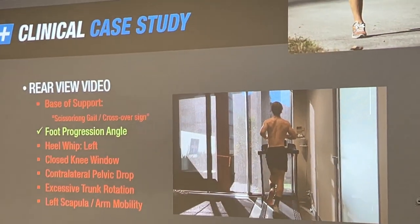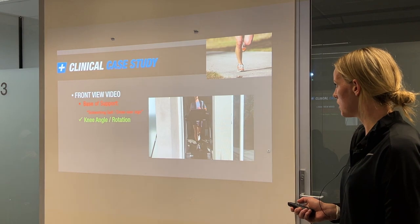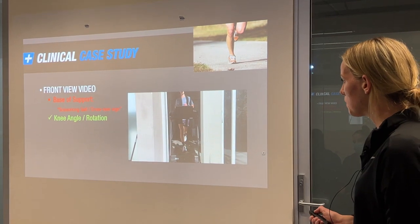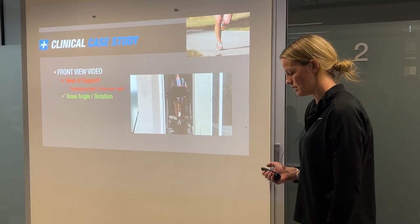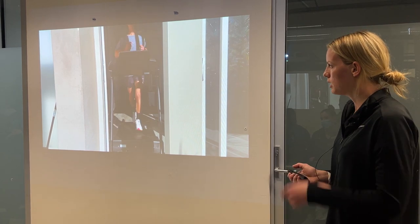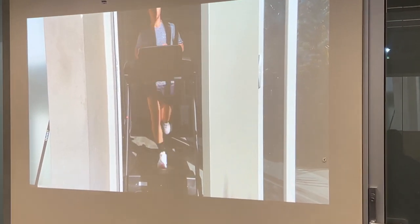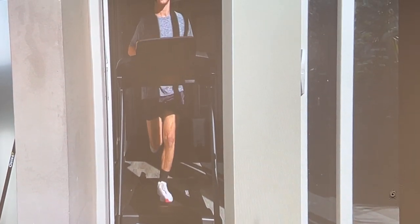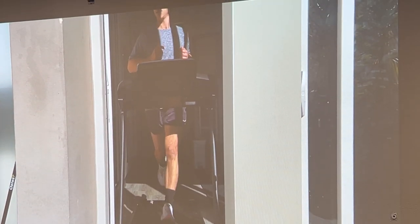If we'd kept Liam's shirt on we might have just noted pelvic drop and scissoring gait and looked at his glutes, but we wouldn't have found the old shoulder injury still affecting his gait, the weak core, and the overactive pelvic floor making his whole gait cycle fairly inefficient. The front view confirms that his knees aren't rotating inwards — the scissoring is coming from his hips causing crossover through the midline, confirming problems with his base of support.